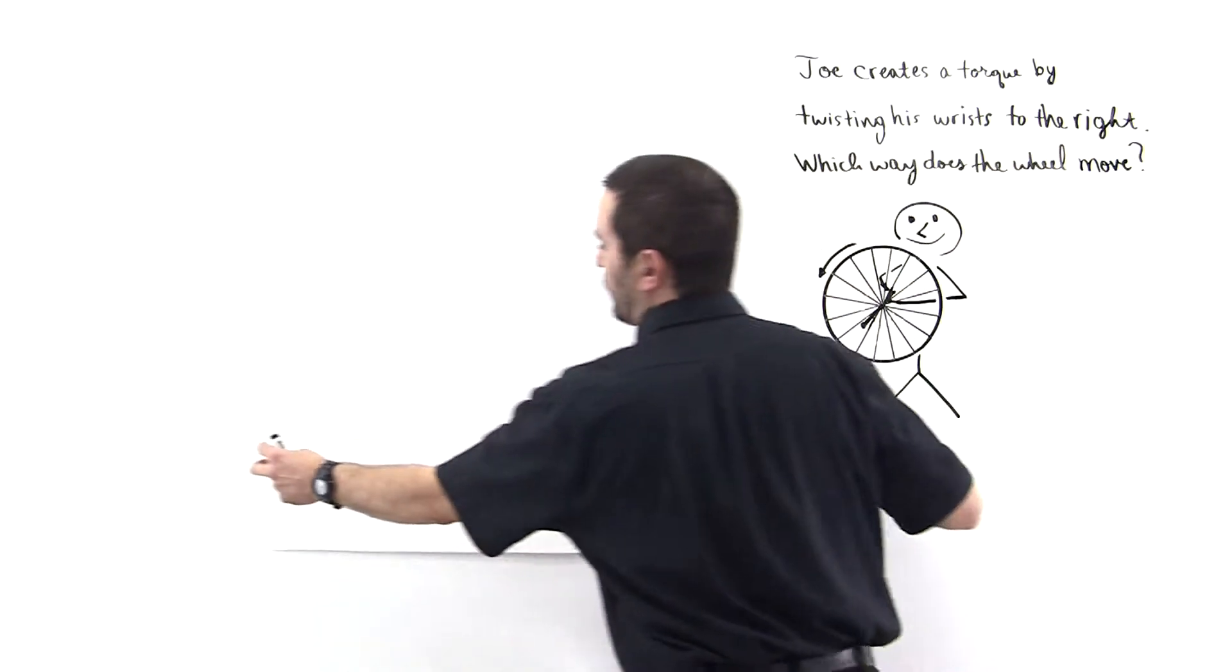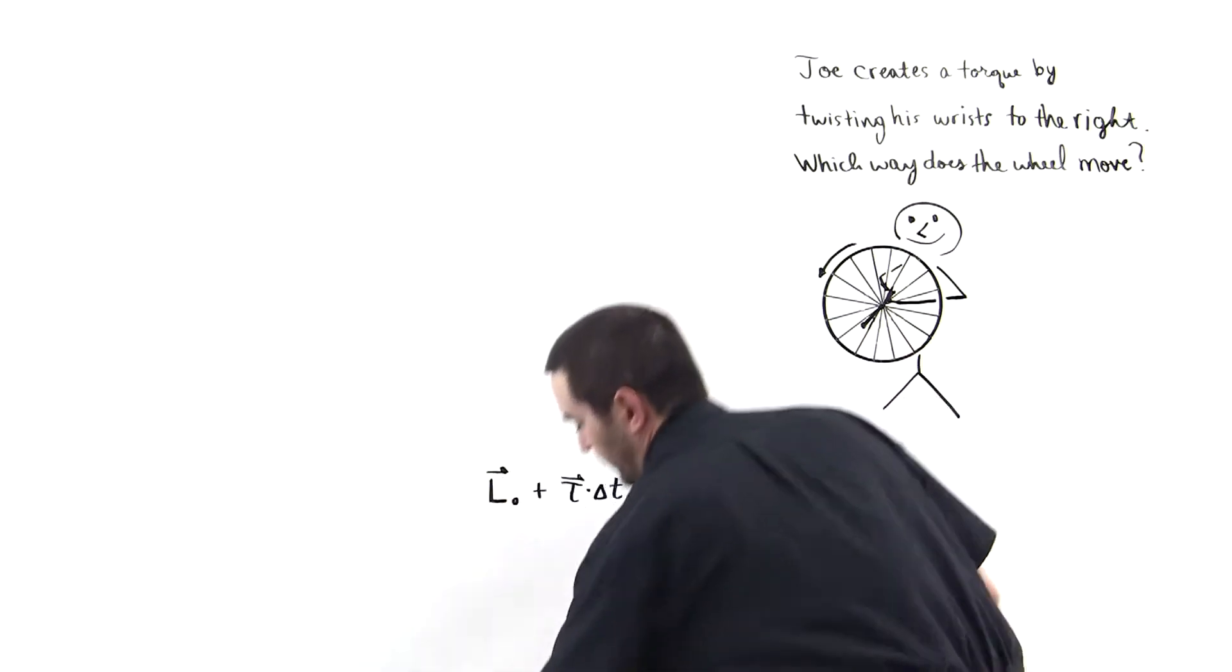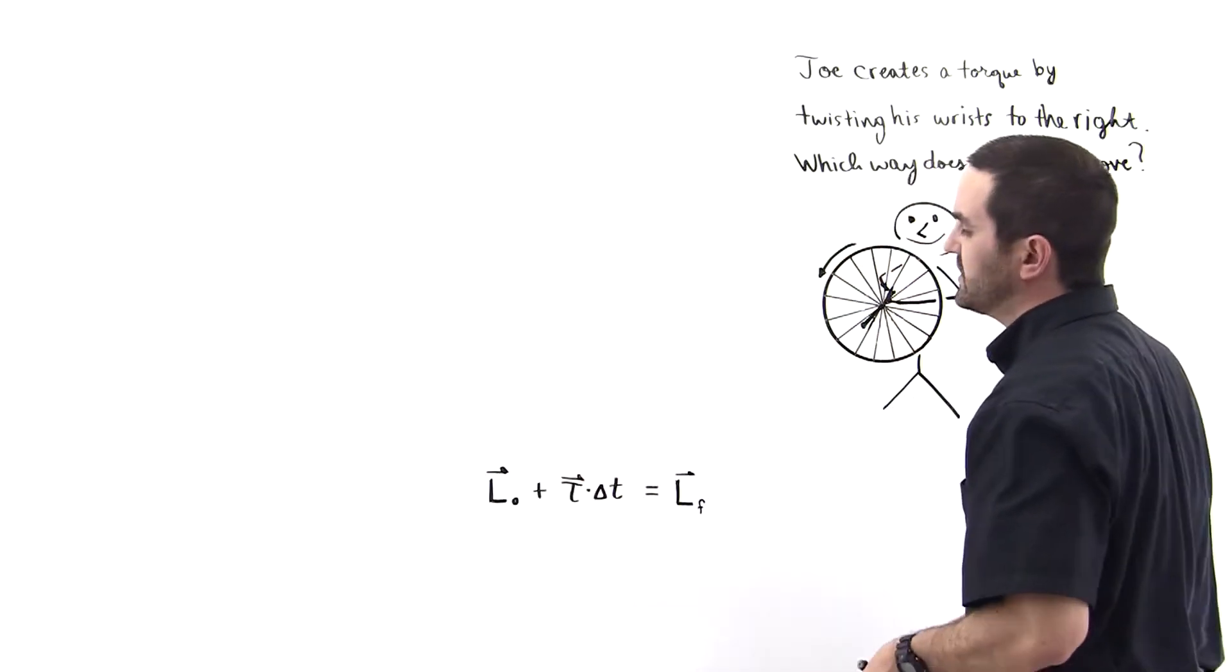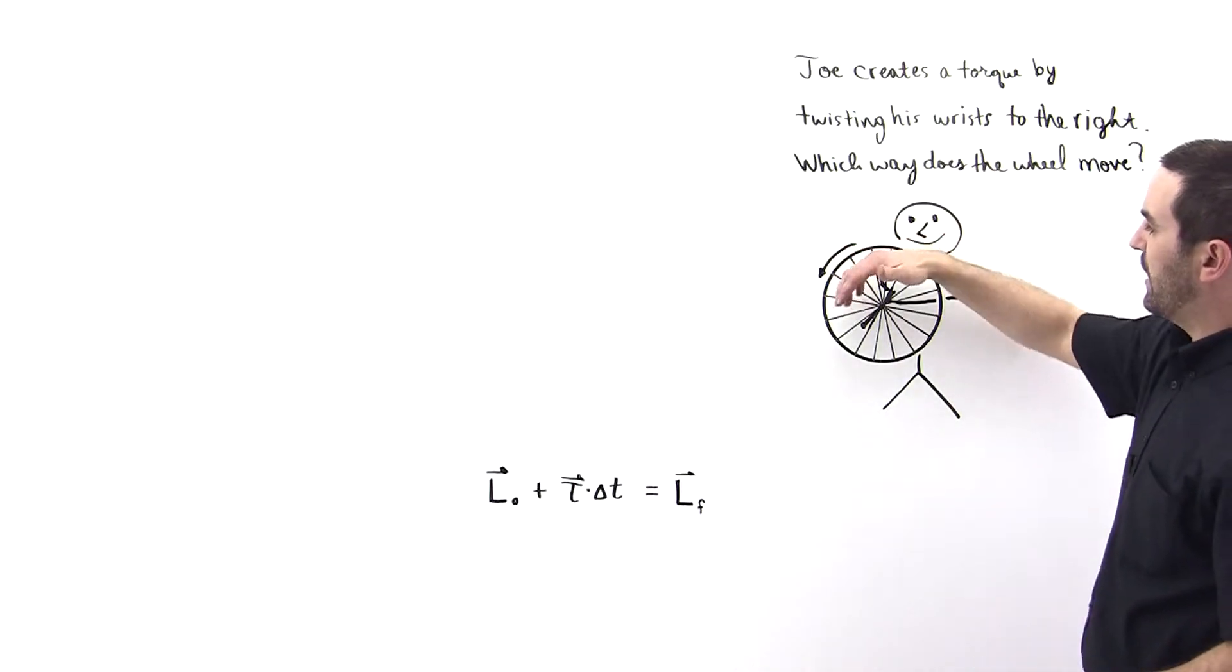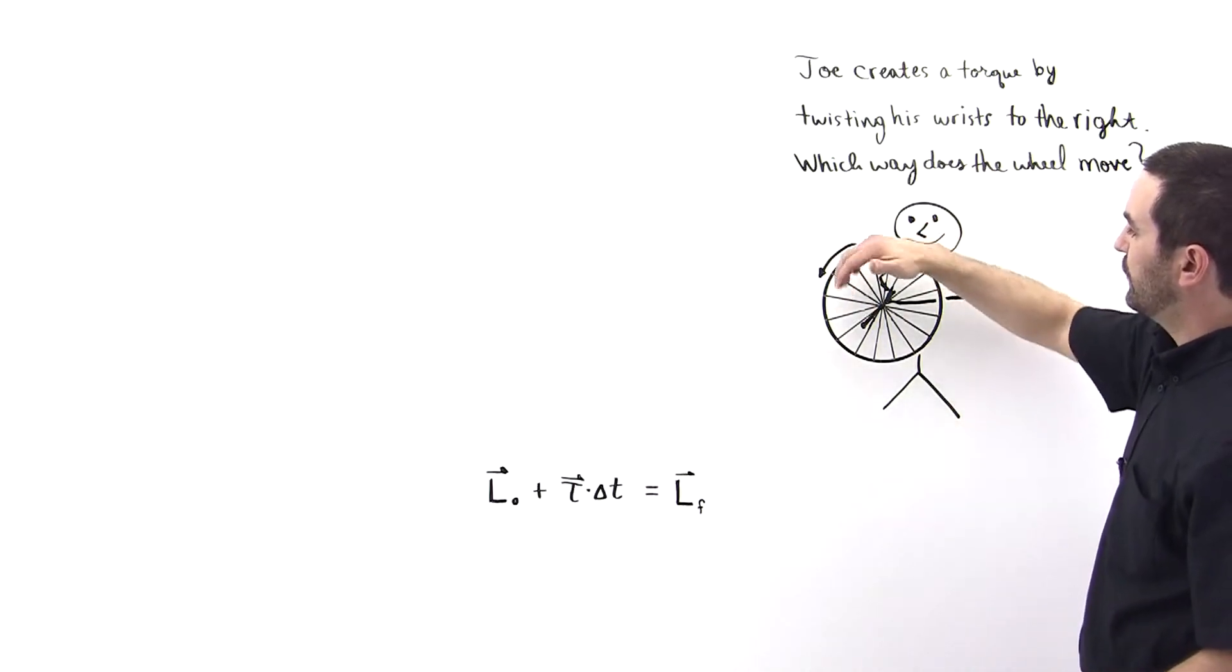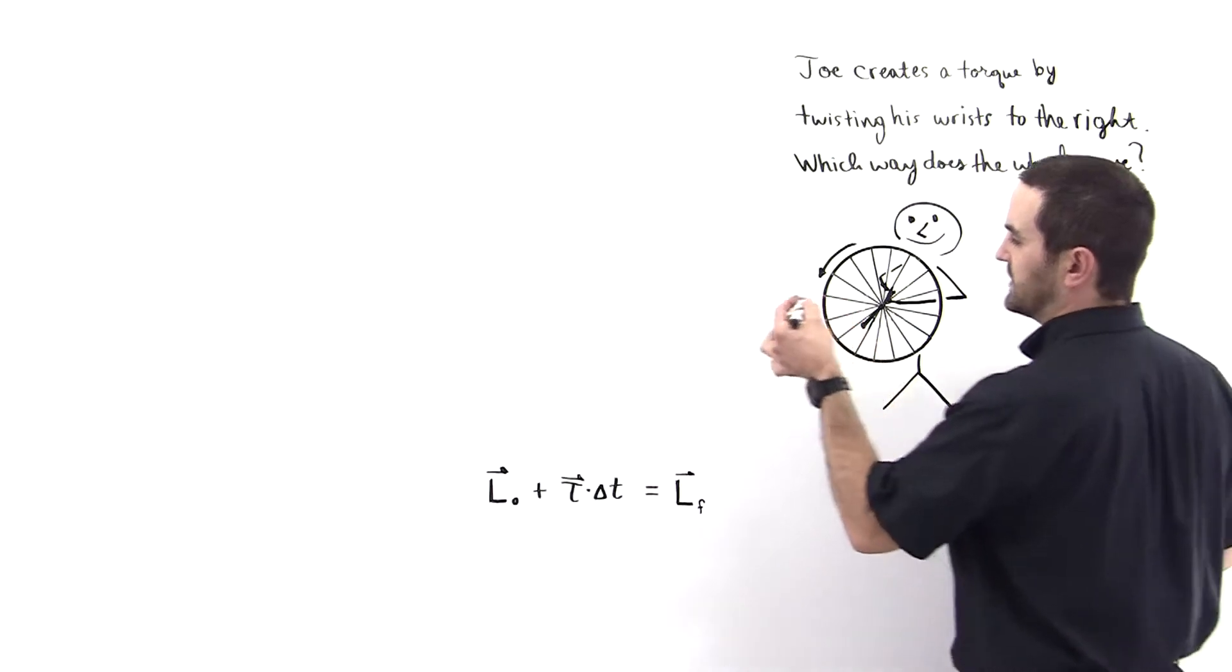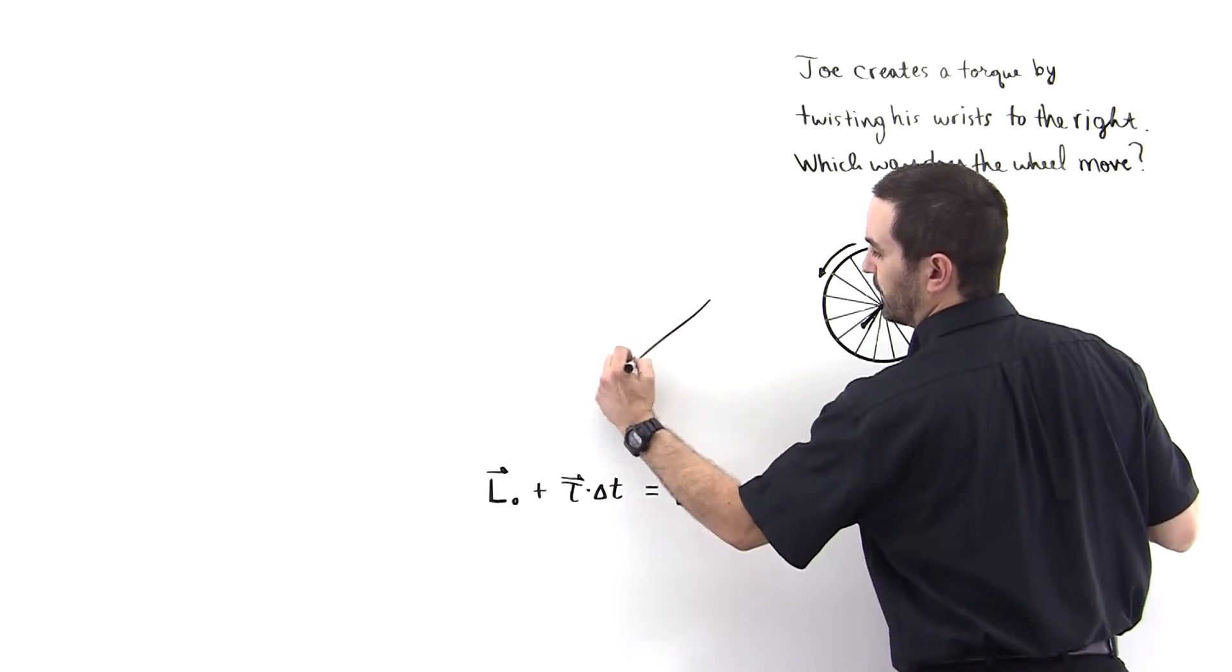So we start off with the equation for impulse and angular momentum. Here it is. The first thing we do is define L-naught. We wrap our fingers in the direction of rotation and we see that L-naught is like this.